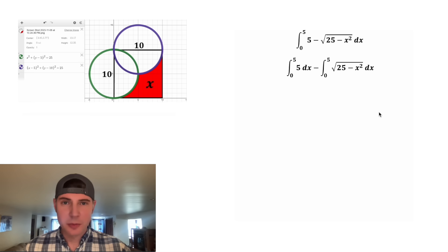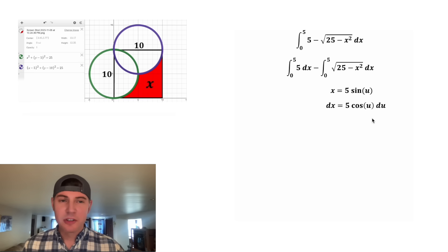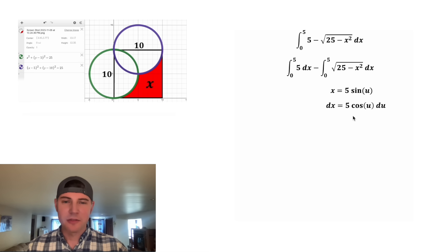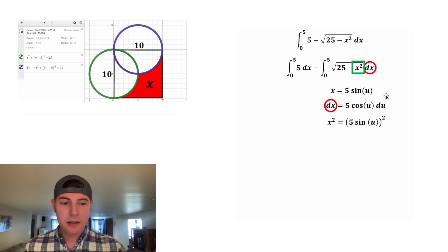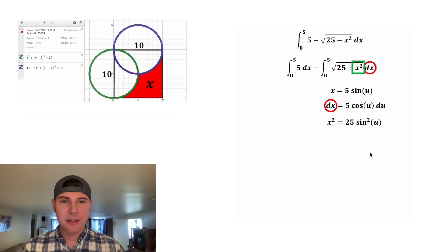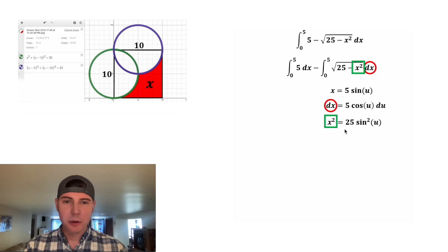We're going to use u-substitution: let x equal 5 sine u. Taking the derivative, since the derivative of sine is cosine, dx equals 5 cosine u du — that gives us a replacement for dx. Next, let's find a replacement for x squared: x squared equals (5 sine u) squared, and that square goes to both the 5 and the sine, giving us 25 sine squared u.